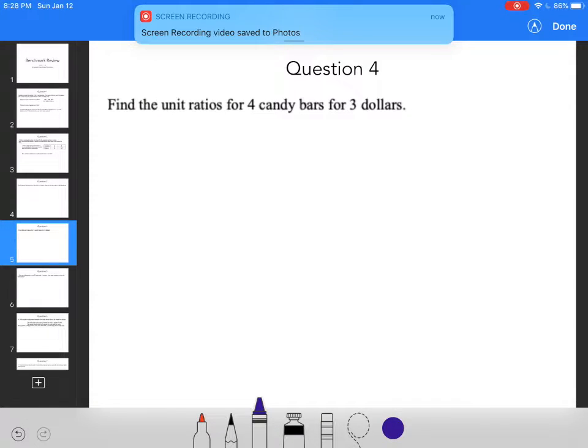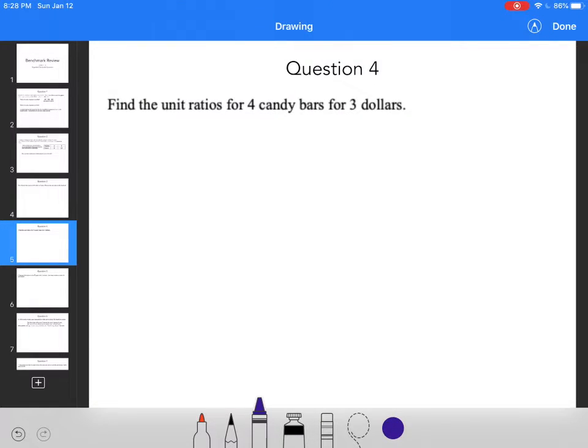Find the unit ratios for four candy bars for $3. So I know four candy bars and $3. I want to figure out how much I can get for a dollar.